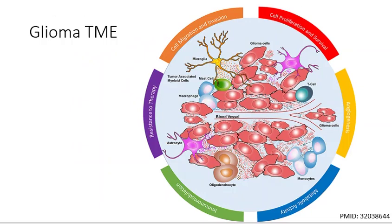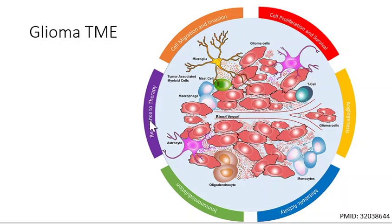There are six facets of the glioblastoma tumor microenvironment: cell migration and invasion, cell proliferation and survival, angiogenesis, metabolic activity, immune modulation, and resistance to therapy — the last of which can also be tied to what we discussed earlier regarding initiation cells and glioma stem cells.